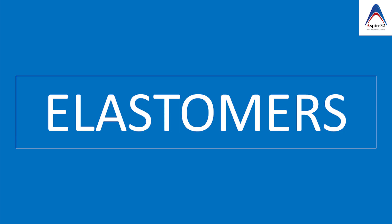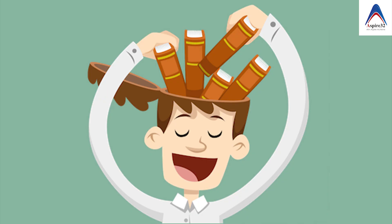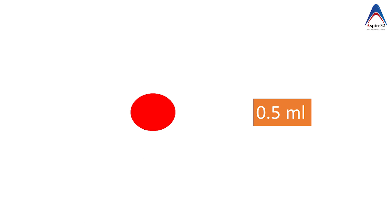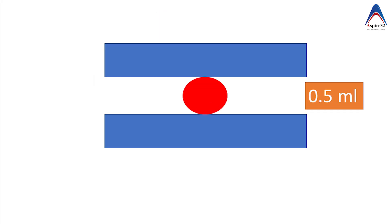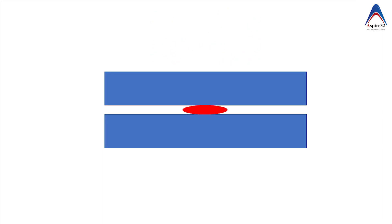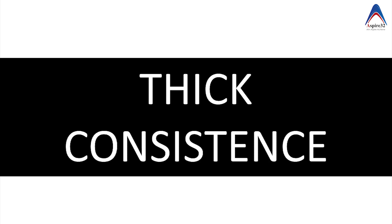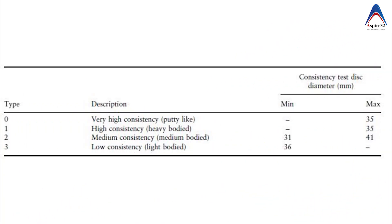Elastomeric impression materials are classified into four categories based on consistency. When a new impression material is manufactured, 0.5 ml of that impression material is placed between two flat metal discs and a force of 1.5 N is applied. Under pressure, the impression material forms a disc. Thicker materials form a smaller diameter disc and thinner materials form a larger disc. Depending on the diameter, they are classified as light body, medium, heavy body, and putty consistency.